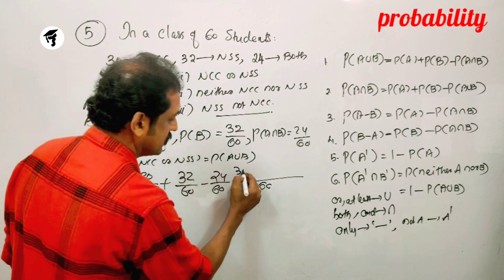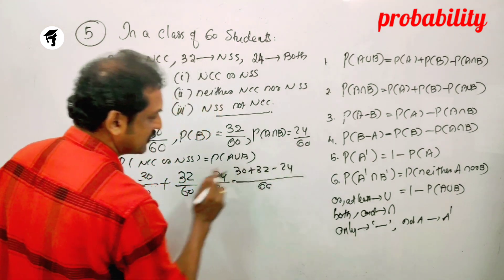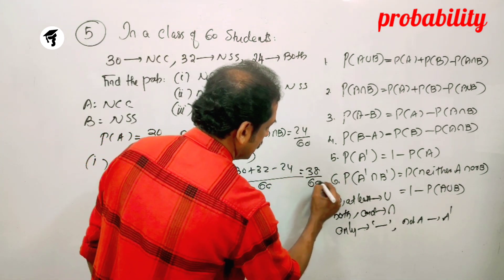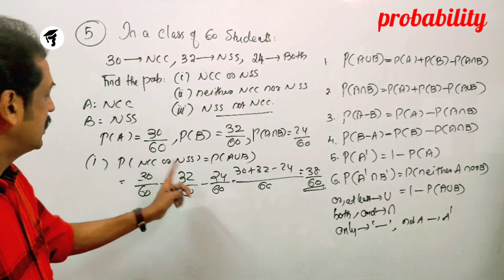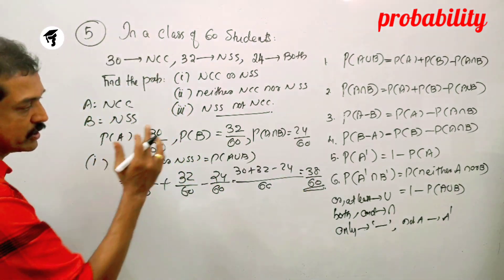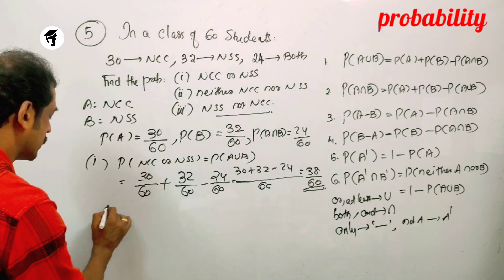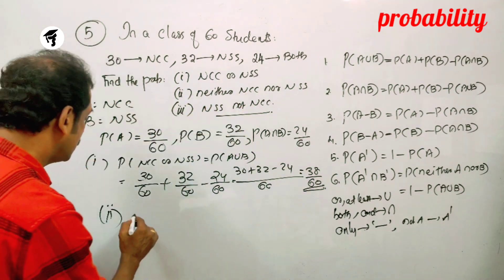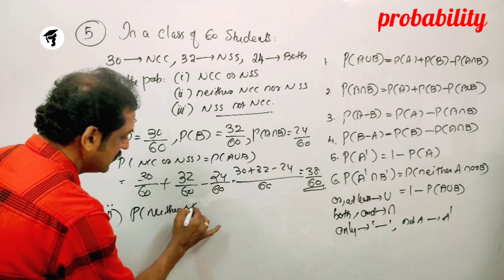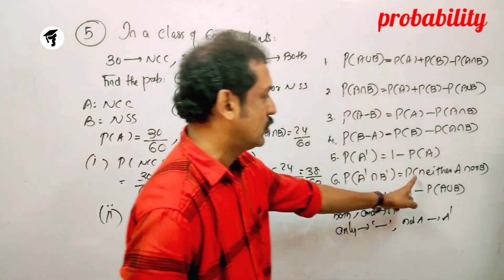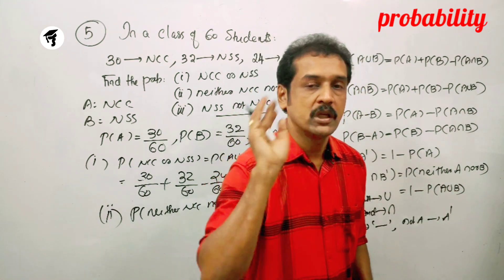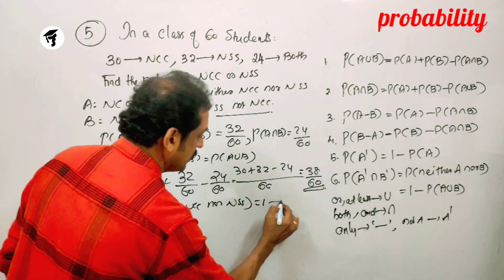30 plus 32 is 62, and 62 minus 24 becomes 38 by 60. Now for P of neither NCC nor NSS: neither NCC nor NSS equals 1 minus P of A union B. That is 1 minus 38 by 60.